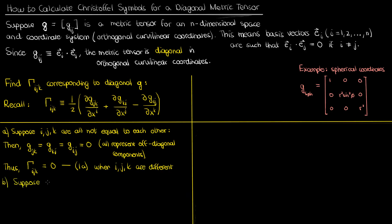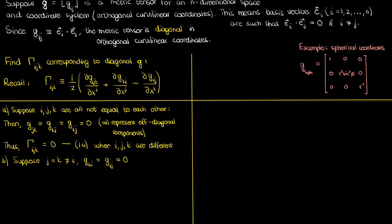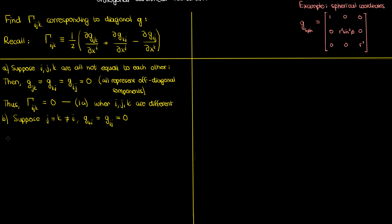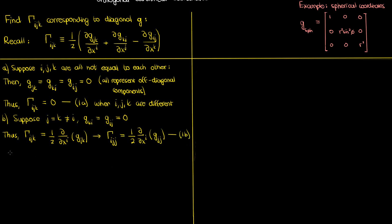The second scenario is when the last two indices j and k are equal but different from i. In that case, G sub ki and G sub ij are 0 because k and j are different from i. The first kind Christoffel symbol then reduces to half of the partial of G sub jj with respect to x super i. Bear in mind that even though j is repeated twice, it is not summed over — we're not using Einstein notation here. Both j and i are free indices. I'll call this equation 1b.